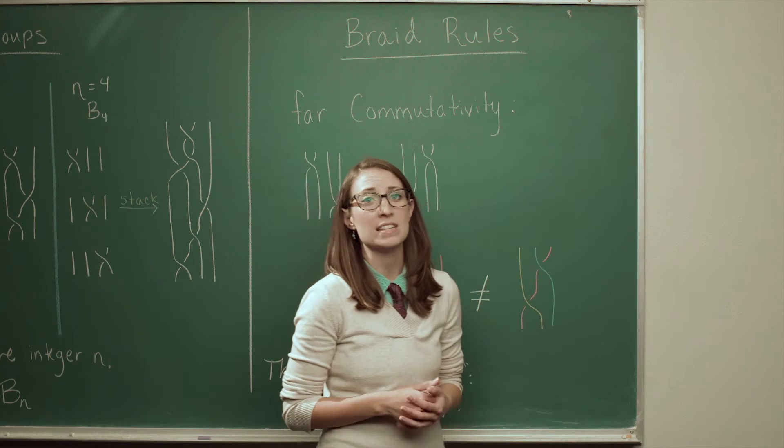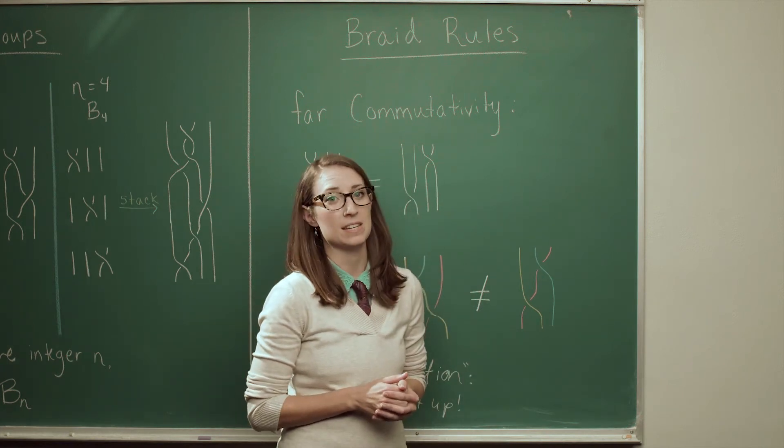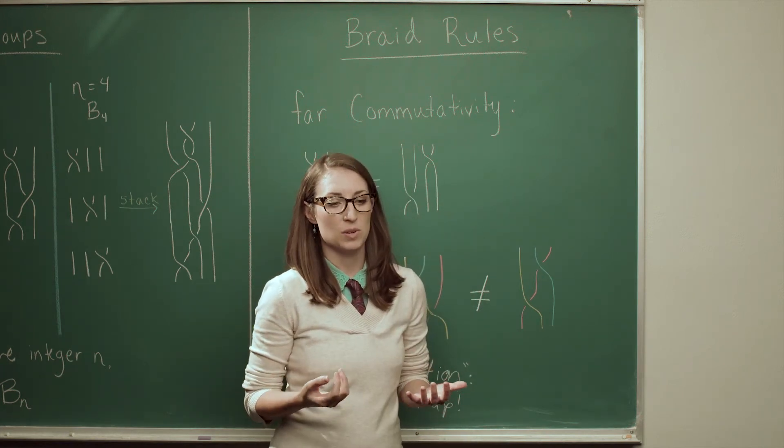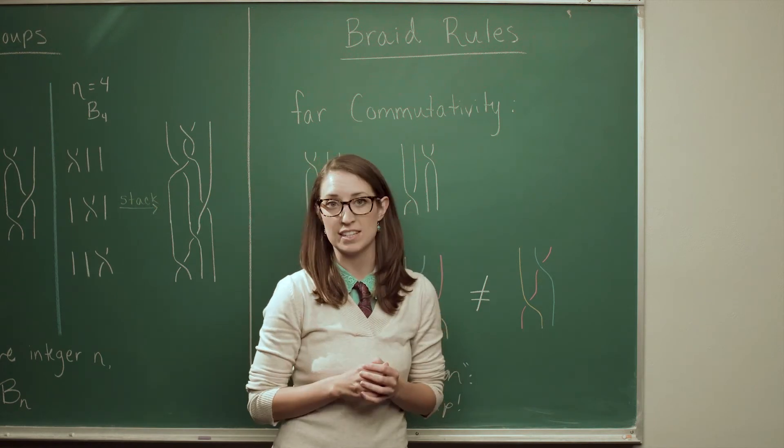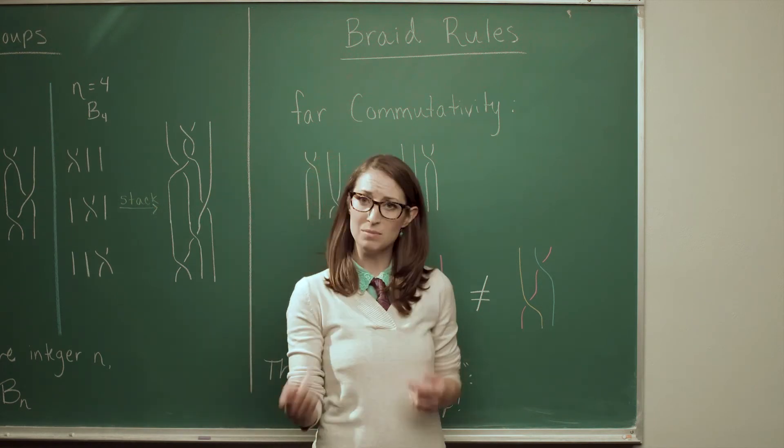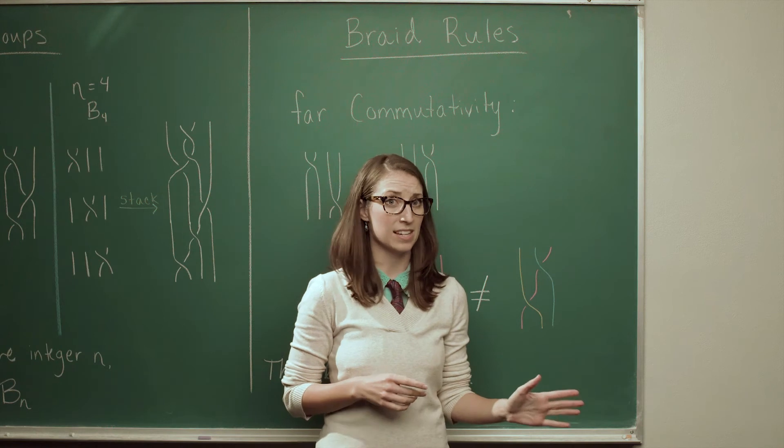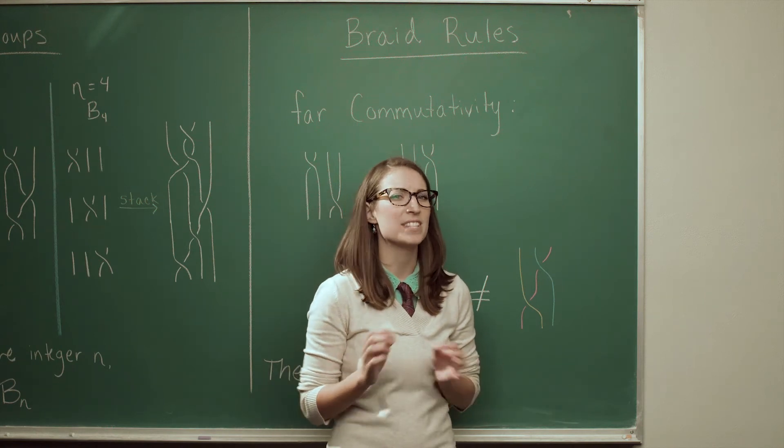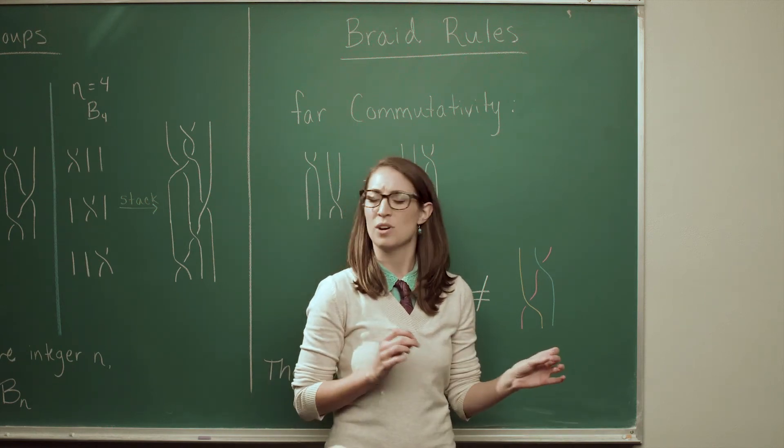So the first rule that we see is called far commutativity. And what this deals with is changing the order of the crossings within a braid. And sometimes that changes the braid and sometimes it doesn't. So let's sort of try to understand when it would change the braid and when it wouldn't.